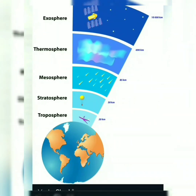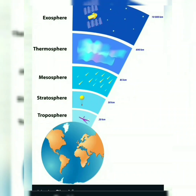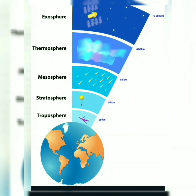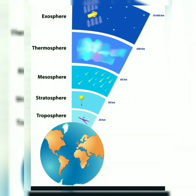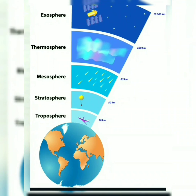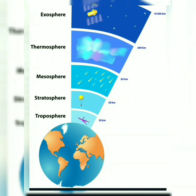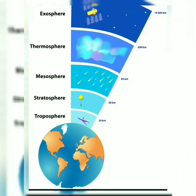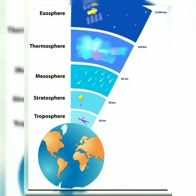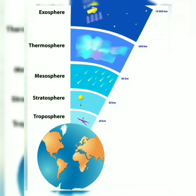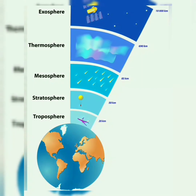Another protective function is reducing the temperature difference between day and night. In the daytime, temperature is high and at night it is low, and the atmosphere is continuously controlling this difference. These are the protective uses of the atmosphere, which you will find on page number ten of your book. There are many other ways our atmosphere helps and protects us, but these are the main ones.